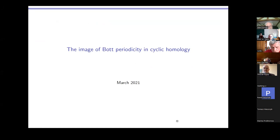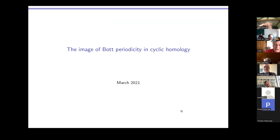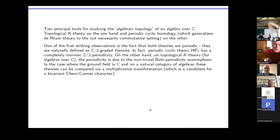I'm going to talk about something which is not very new, but maybe not quite so well-known, and also in the last few weeks or so I have made an effort to understand the details of the situation in more detail. The situation I'm interested in is the comparison between K-theory and cyclic homology, and in particular the periodicity properties of the two theories.